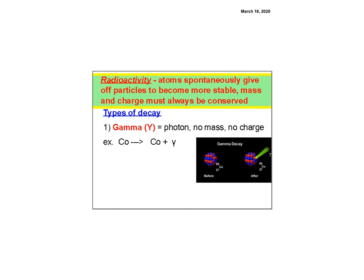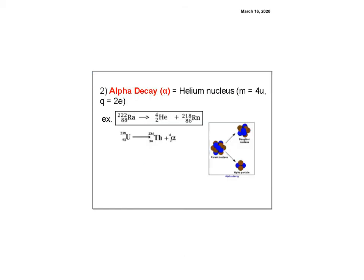Radioactivity is atoms spontaneously giving off particles to become more stable. Past atomic number 83, nuclei become unstable and throw out particles from their nucleus until they stabilize. One type is gamma decay — gamma is just a photon, so there's no mass and no charge change. You start with cobalt and end with cobalt, but it's more stable because it gave off energy. There's no change in the number of nucleons.